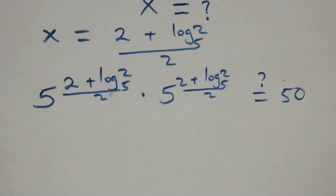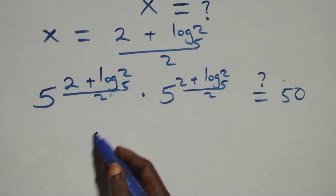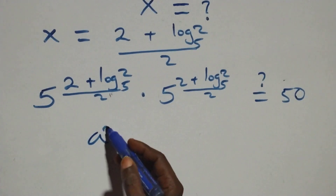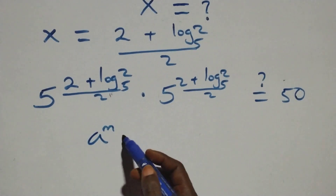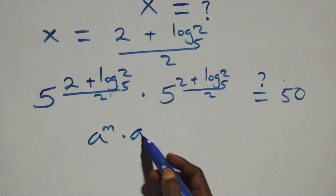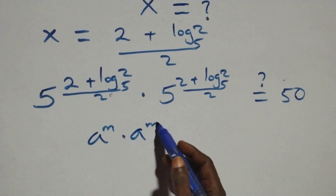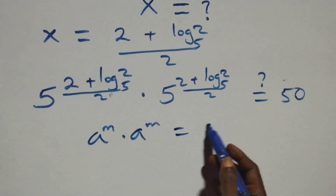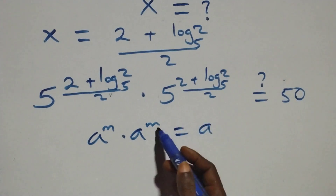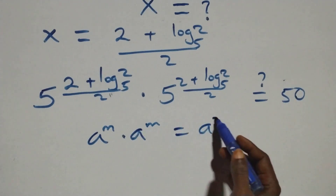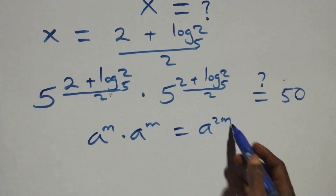Here we have the same base multiplying. Following the rule: when we have a raised to power n times a raised to power n, this is the same as a raised to power n plus n, that's a raised to power 2n.